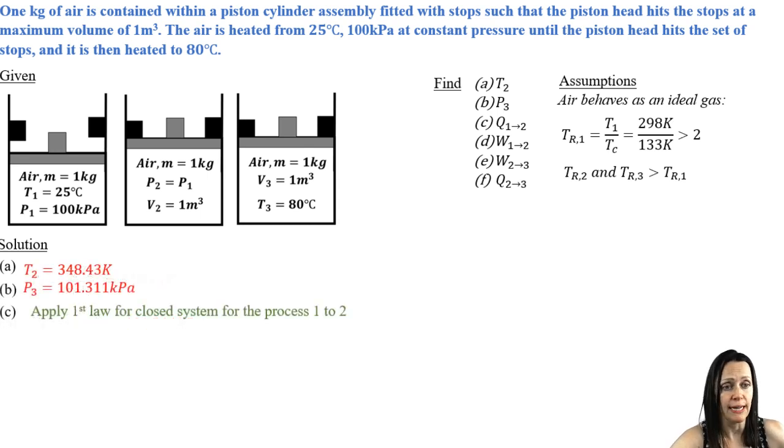For part C, I'm asked to find the heat transfer. And so I'm going to apply my first law for a closed system between states one and states two. Got Q minus W equals delta U plus delta kinetic energy plus delta potential energy, all in units of energy, not energy per unit mass. My kinetic energy and potential energy terms, I can go ahead and assume are equal to zero. And so I've got Q minus W equals delta big U. And I might want to put that in terms of M delta little u.